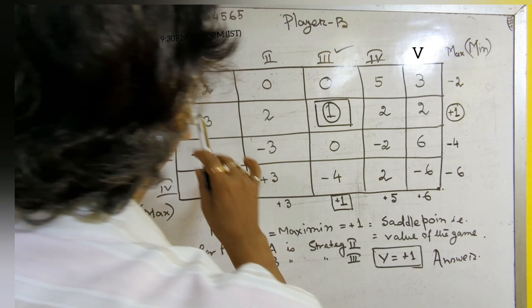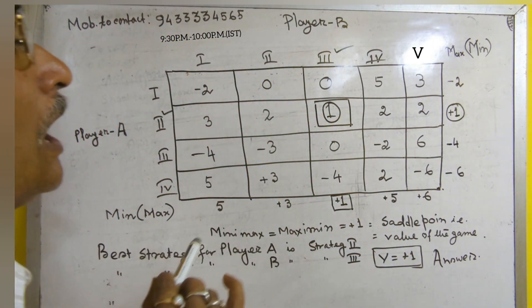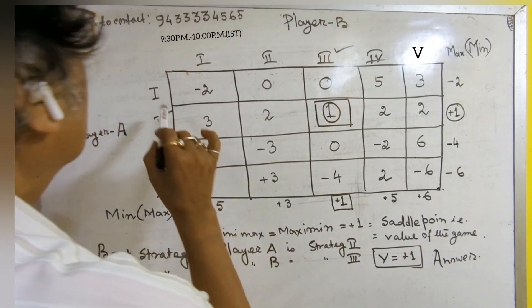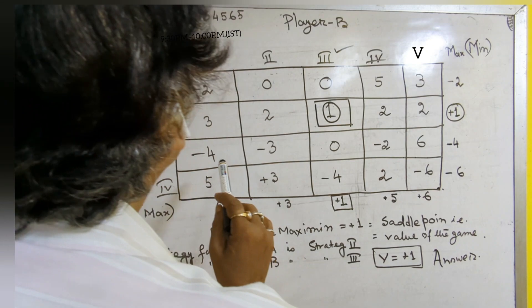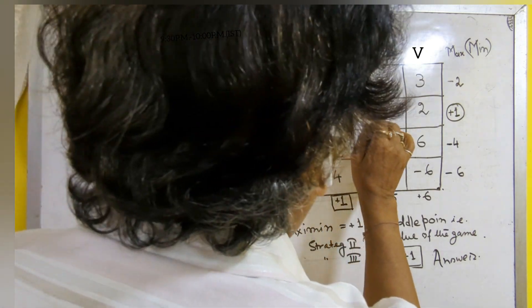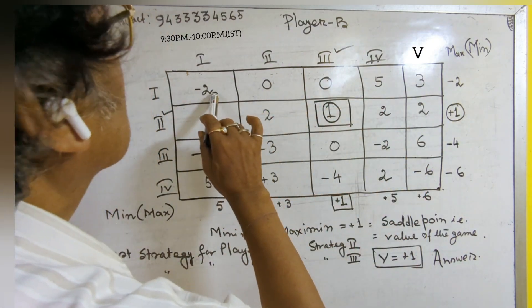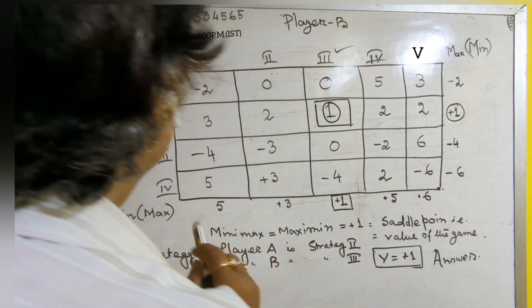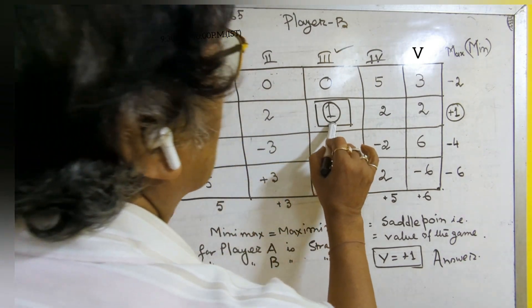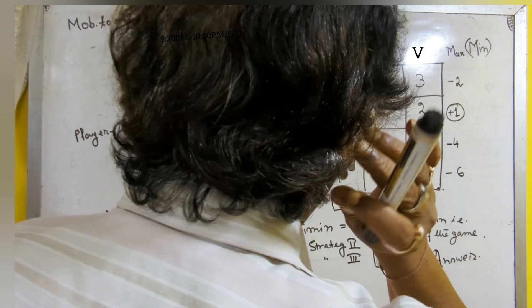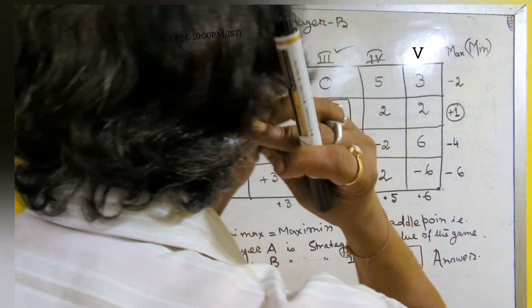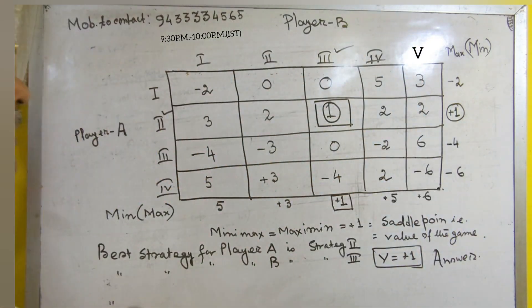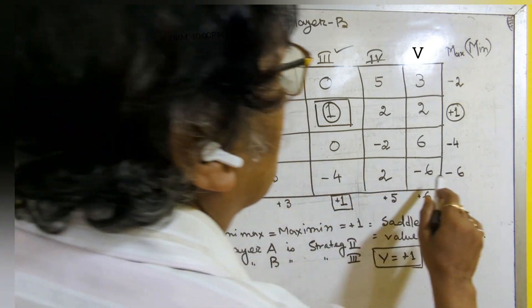First of all, for each row, you will find the minimum element and write it to the right side of the matrix against the corresponding row. Taking the first row — the minimum value for the second row is minus 2, for the third row the minimum value is plus 1, for the third row similarly the minimum value is minus 4, and the fourth row the minimum value is minus 6.